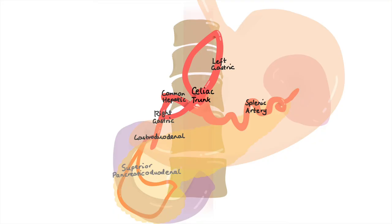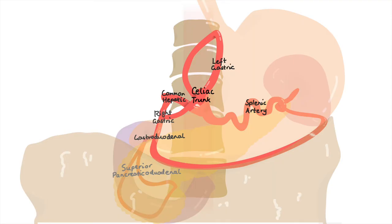You may know that the greater omentum hangs off the greater curvature of the stomach. The old Greek word for omentum is epiploon. These arteries folding around the greater curvature of the stomach are thus gastroepiploic arteries.